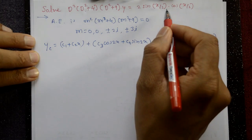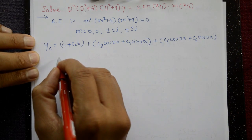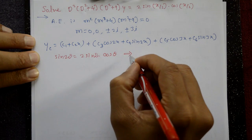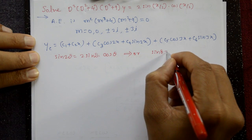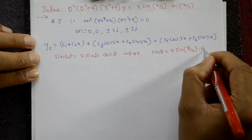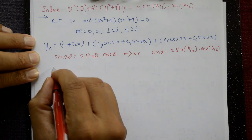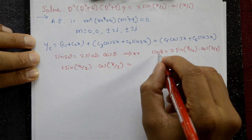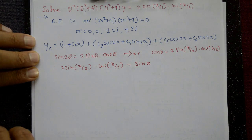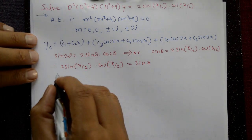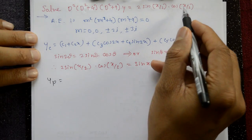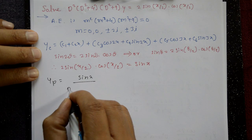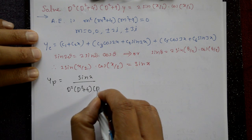Now go to the particular integral. Looking at the right-hand side φ(x), we use the standard formula: sin(2θ) = 2·sin(θ)·cos(θ). Therefore 2·sin(x/2)·cos(x/2) equals sin(x). So the particular integral is sin(x) upon f(D), where f(D) = D-squared into D-squared plus 4 into D-squared plus 9.